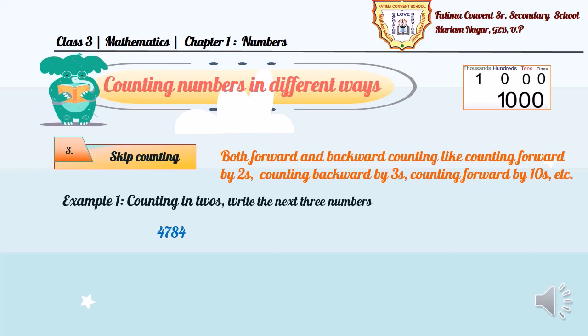That is, counting in 2s, write the next three numbers, 4784. So, you need to count by 2s, or we can say, add 2 to the given number. So, the answer will be 4786, 4788, 4790.